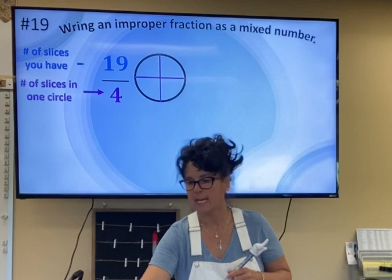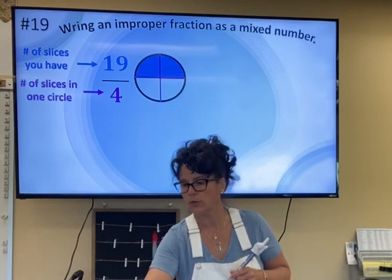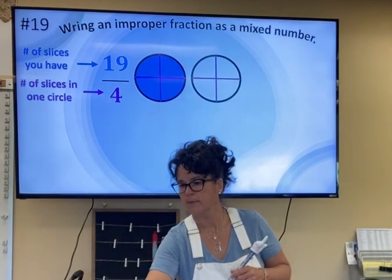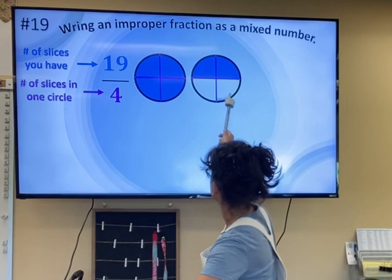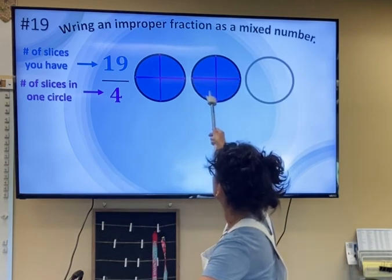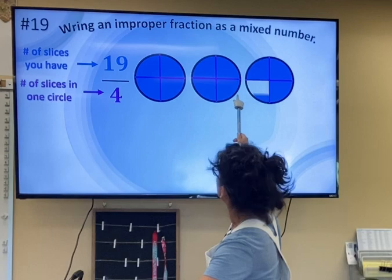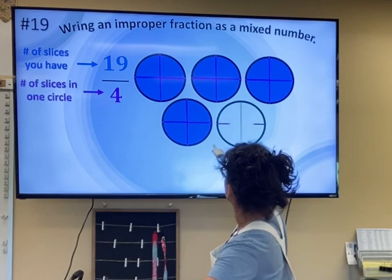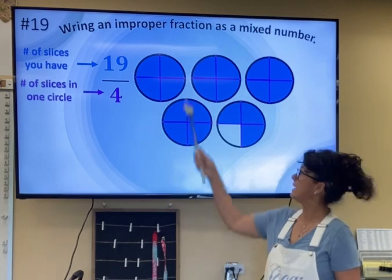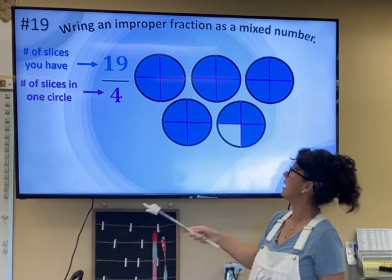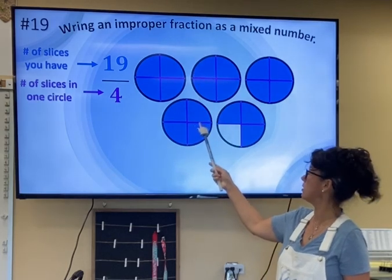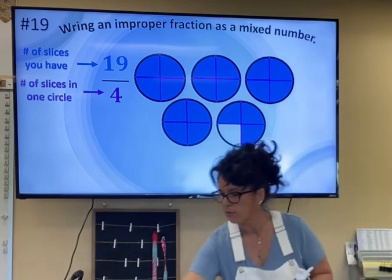So if we start putting in 19 slices: 1, 2, 3, 4 — it's full, so let's make another one. 5, 6, 7, 8 — still full. 9, 10, 11, 12, 13, 14, 15, 16, 17, 18, 19. So we have 19 slices, and it takes 4 to fill a circle. We end up with 1, 2, 3, 4 full circles, and then 3 slices out of 4.